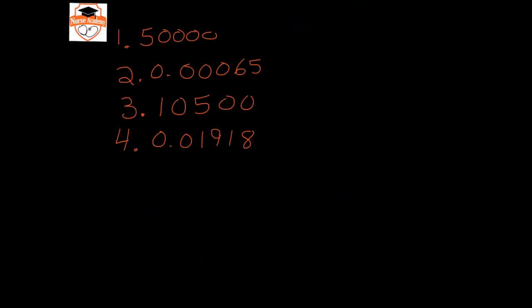In the first worked example, the decimal place starts at the end of the number and I move it to the left 1, 2, 3, 4 times. That gives 5 times 10. Since this number is larger than 1, that's a positive 4, so the answer is 5 times 10 to the 4th.